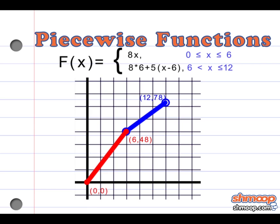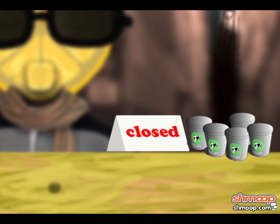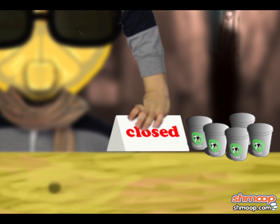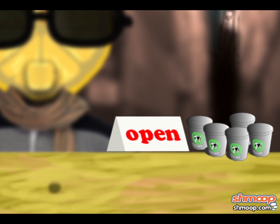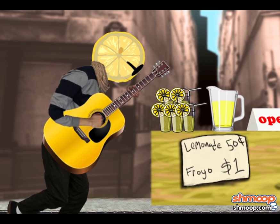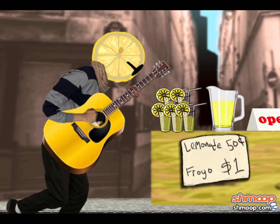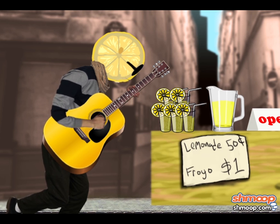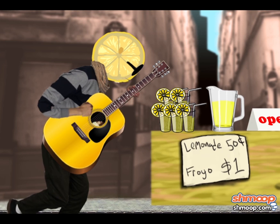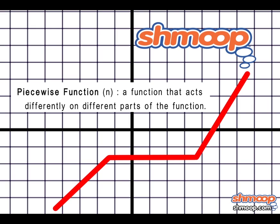Piecewise functions are just big functions made out of smaller pieces of other functions. John loves them so much he even has a song about them: "Give Piecewise a chance, give Piecewise a chance — yesterday."